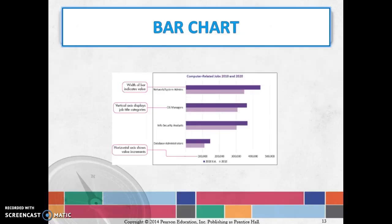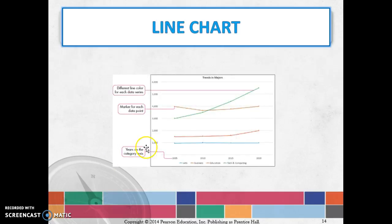Same goes with the bar charts. We can do it the same way. We can compare two things together. We can do a line chart where we compare several different things. Again we've got different colors of the lines so that we can look at trends over all different types of categories.